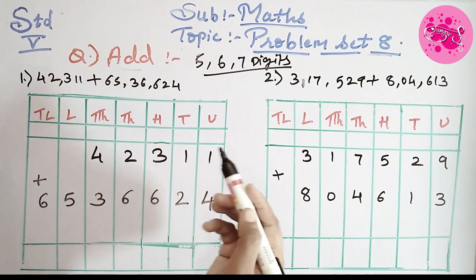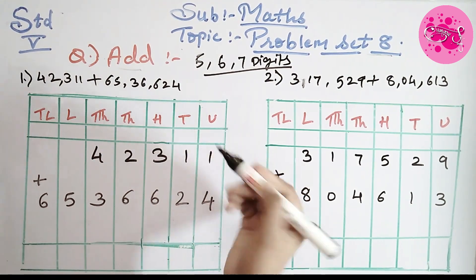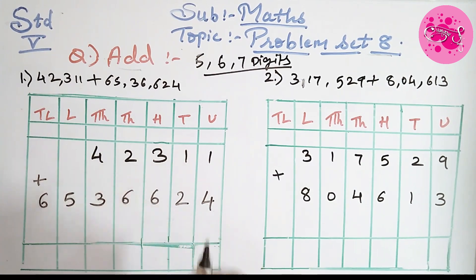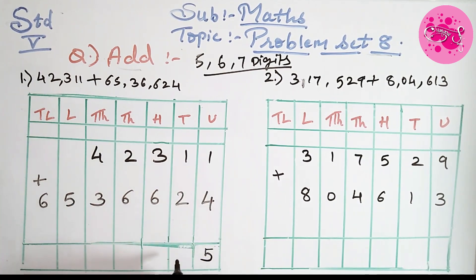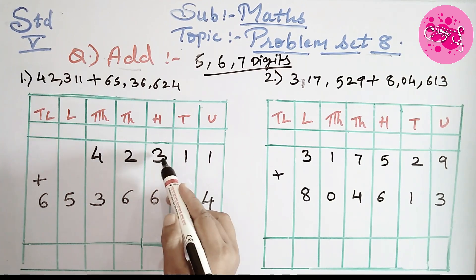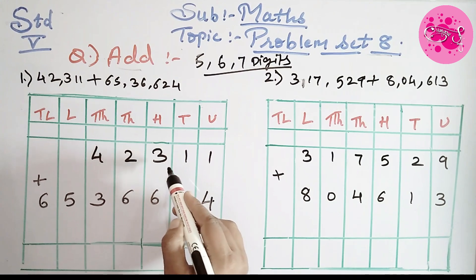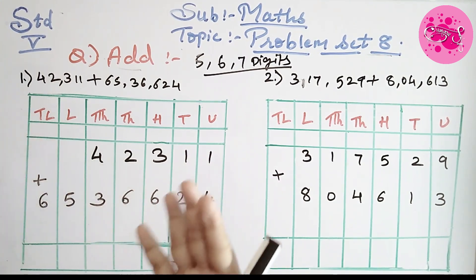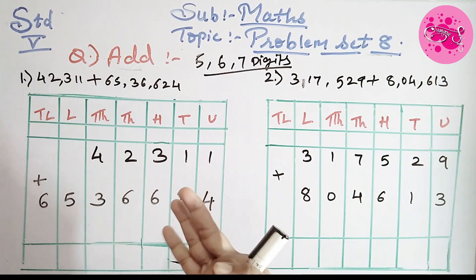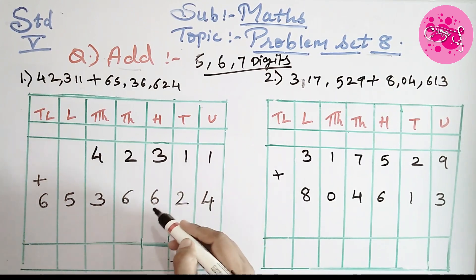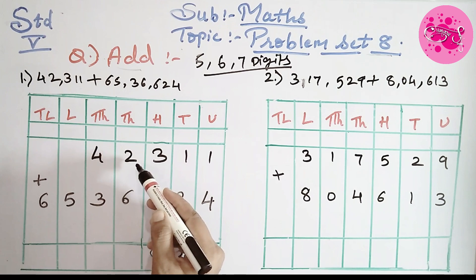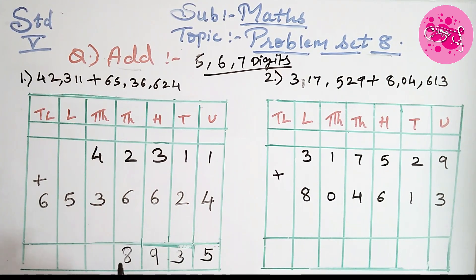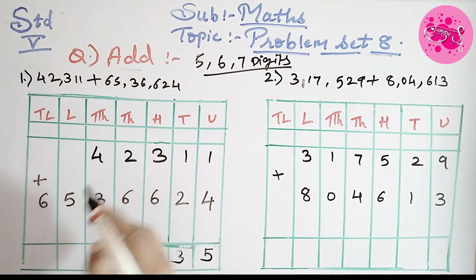Now here we always have to start from the right hand side, from the unit place. So 4 plus 1, we get the answer 5, so write 5. Now 2 plus 1 is 3, so write down 3. Next, 6 plus 3 — if you do not want to add directly you can use your fingers also. 6 and 3 fingers more, that is 7, 8 and 9. So write 9 in the answer column. Then 6 plus 2, we get 8, so write down 8. 3 plus 4 is 7, so write 7.